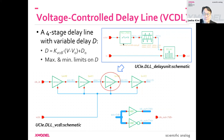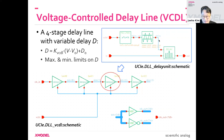This is another variable domain translator primitive, and that delay is determined by the input control voltage. For this example, we're using a linear function. The limit primitive is to make sure that the delay doesn't go below zero, because that's just not realistic.